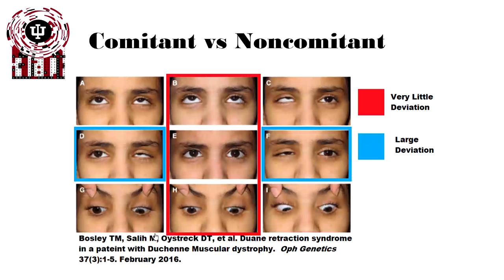There are also definitions called comitant versus non-comitant. Comitant and non-comitant refer to the deviation across different positions of gaze. If the eye looks to the left, up-left, lower-left, or whatever position, and the deviation is constant, it is considered comitant. However, if the eye's deviation is greater in different fields of view, the eye is non-comitant. Here we have an example from Duane's retraction syndrome, where when the patient looks up and down, there's not as much deviation, but when trying to look left or right, there's a larger deviation — an example of non-comitant tropias.